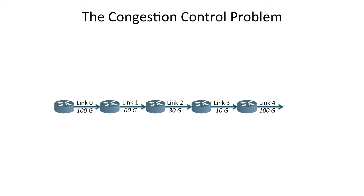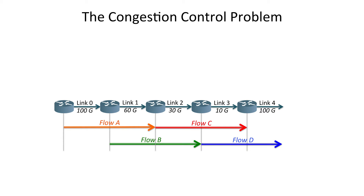First, let me describe the congestion control problem. Here I have a network with a set of links with different capacities, and I have flows that use different subsets of these links. The congestion control problem is to find rates for these flows that are efficient, fair, and feasible, so they avoid congestion.